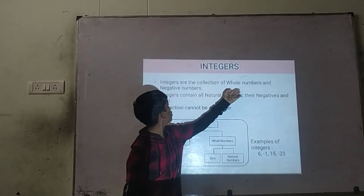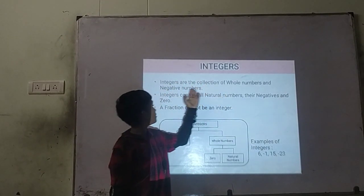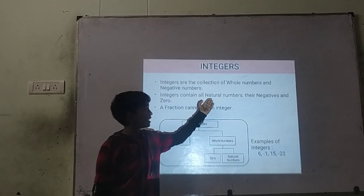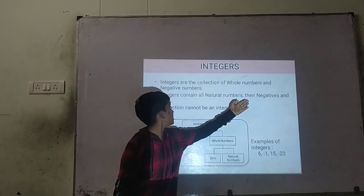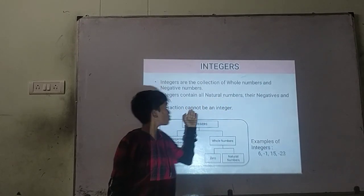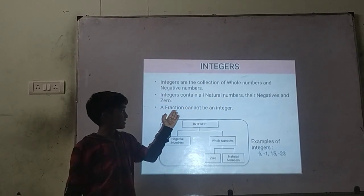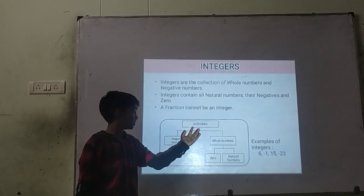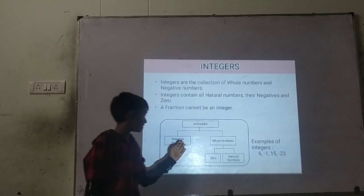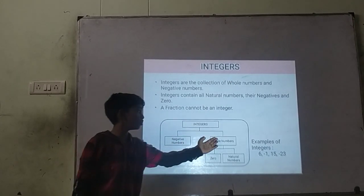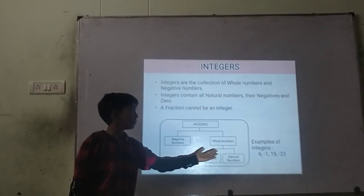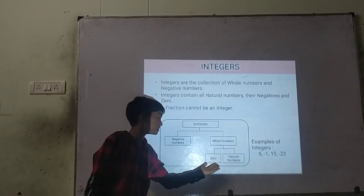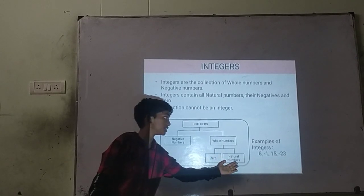Integers are the collection of positive numbers and negative numbers. Integers contain all natural numbers, negative numbers, and 0. A fraction cannot be an integer. Integers are spoken of in at least two parts: negative numbers and positive numbers. Positive numbers are further divided into two parts: 0 and natural numbers.